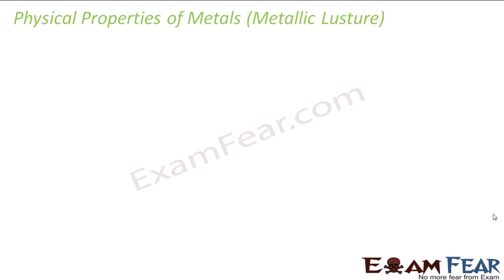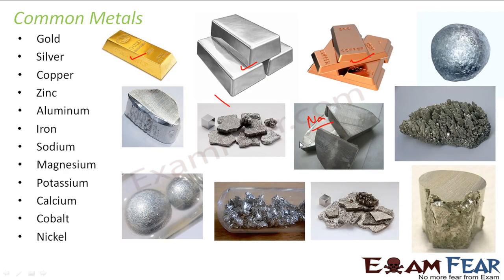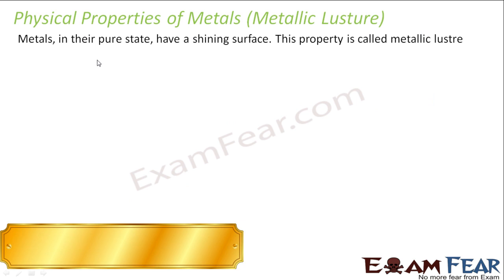Metals have some physical properties. All the metals which we have seen in the previous slide, they shine — everything has a shine. So, you can say that metal in the pure state has a shining surface. Please note, this physical property is not applicable to all; there may be exceptions, because the main definition of a metal is anything which loses an electron.